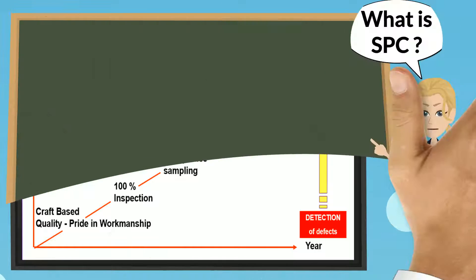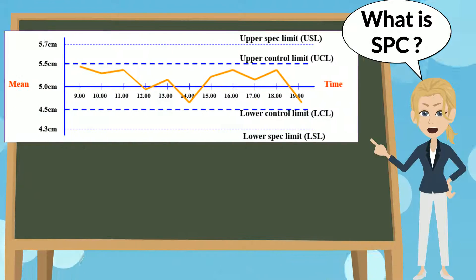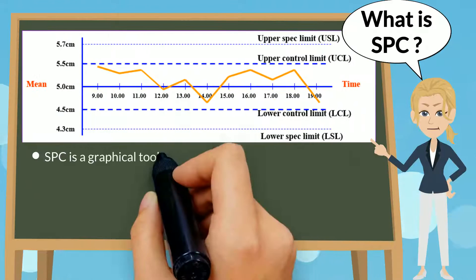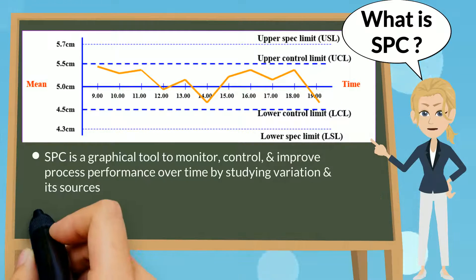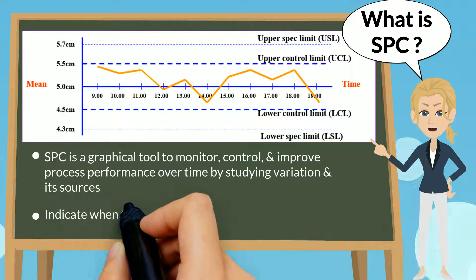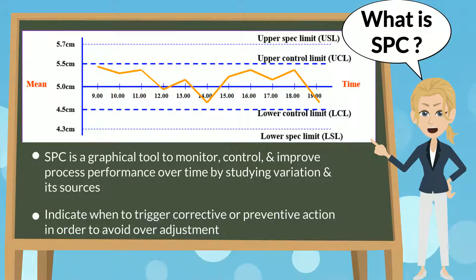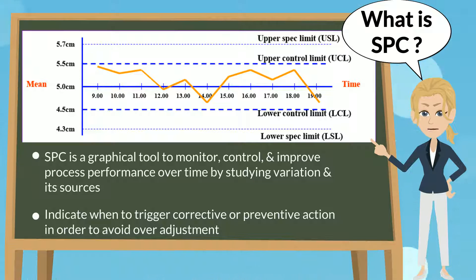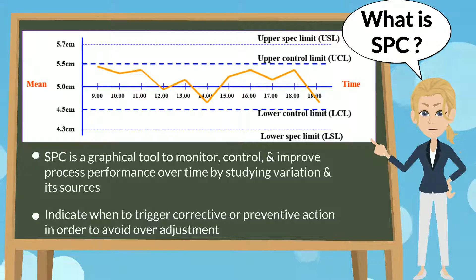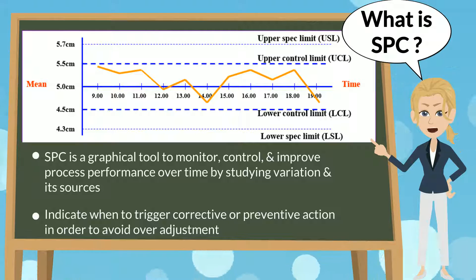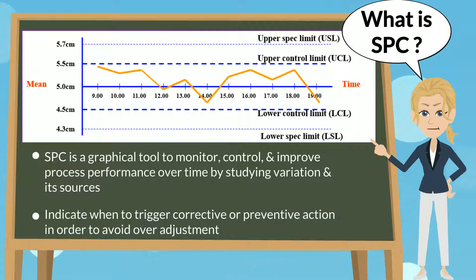SPC is a graphical tool to monitor, control, and improve process performance over time by studying variation and its sources. It is an effective defect prevention tool.